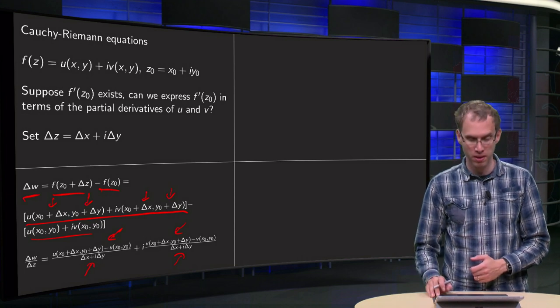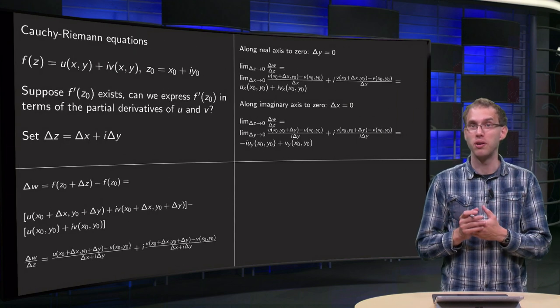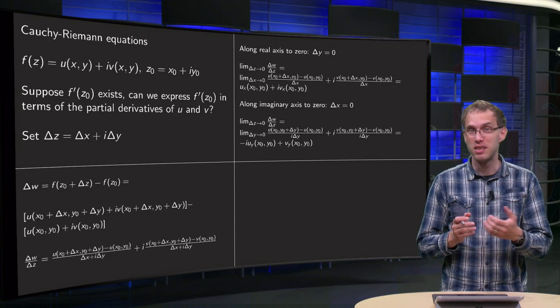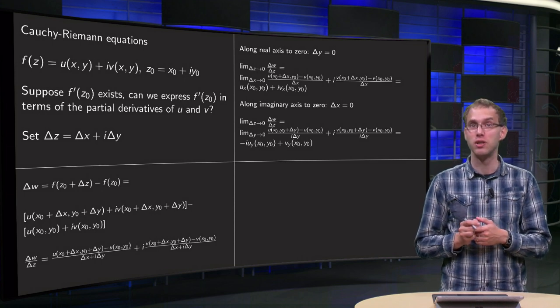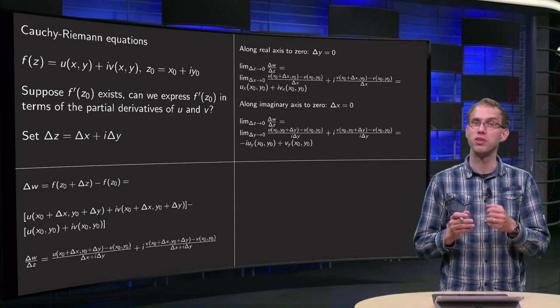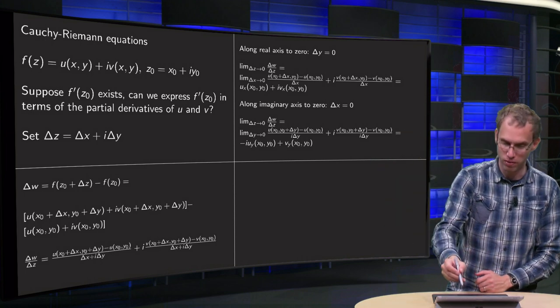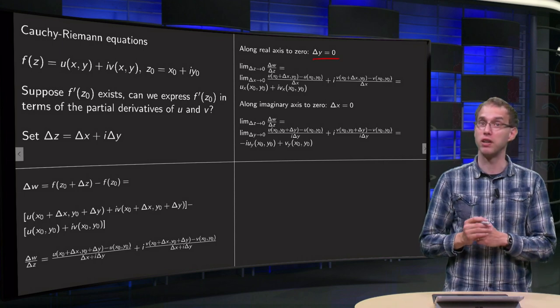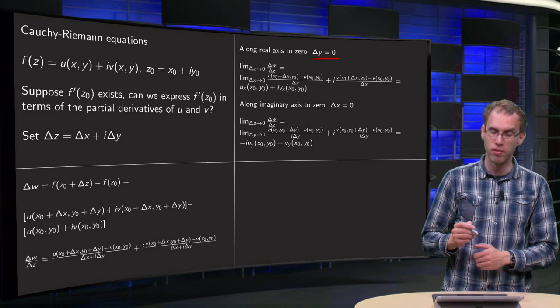How does this help us? Well, f is differentiable, so if you take the limit Δz to 0, this limit has to exist. And we can take this limit in many ways, but we will take it in two different ways. First we go along the real axis to 0, so that means that we put Δy to 0 first and then we take the limit Δx to 0.